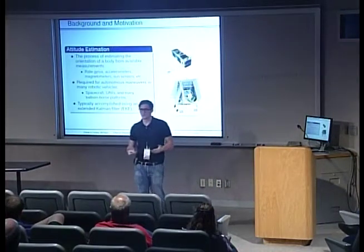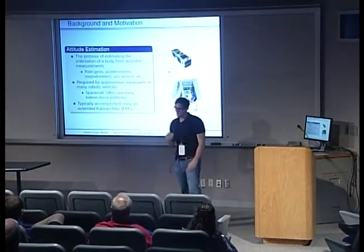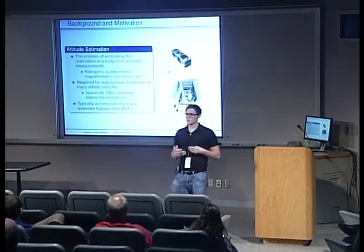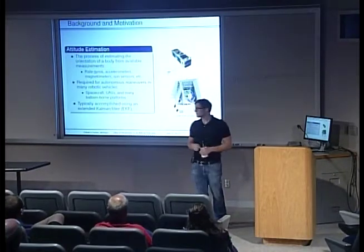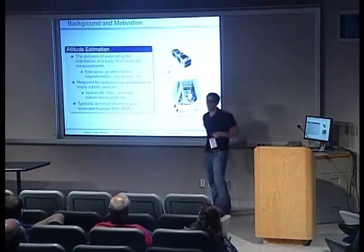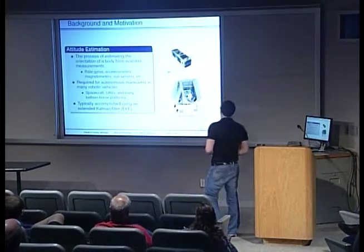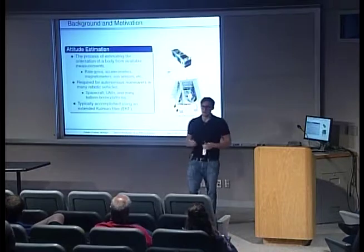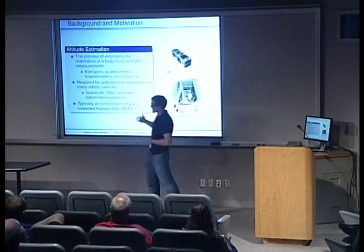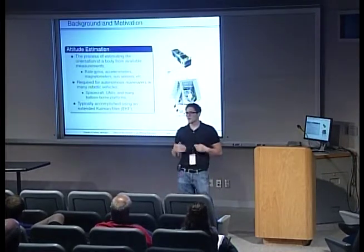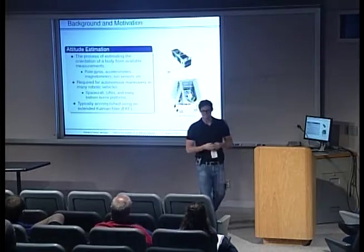Attitude estimation is the process of fusing these measurements together to come up with an accurate attitude estimate. This is required for the proper operation of many robotic vehicles, including spacecraft, unmanned aerial vehicles, and many balloon-borne platforms. Any vehicle requiring autonomous rotational maneuvers will require an attitude control and determination system. For example, here I've shown the CAN-X2 nano-satellite and BLAST, the balloon-borne large aperture submillimeter telescope. BLAST used the extended Kalman filter, a very popular and optimal attitude estimation technique, very successfully.